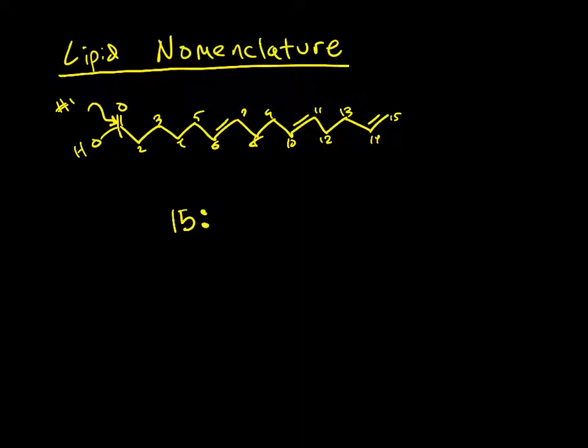It's convention to use a colon. And at all the locations we see a double bond, we're going to include them. We see three double bonds here. We put in parentheses a delta, and then we describe the locations of where those double bonds are located. So this is 6, 10, and 14.